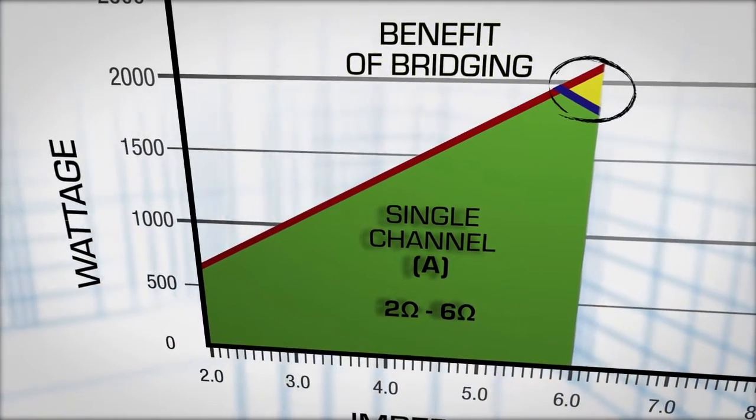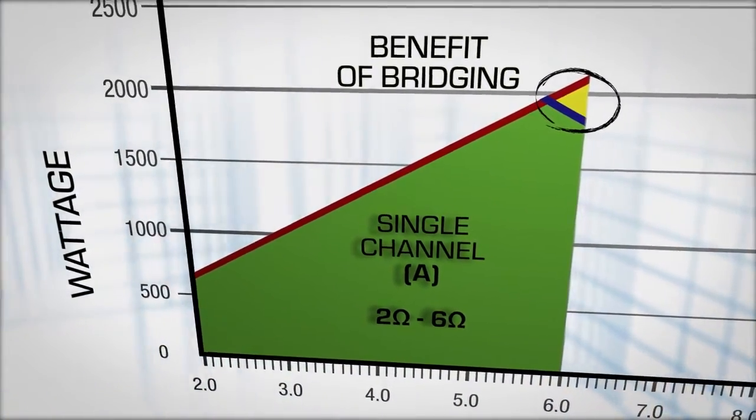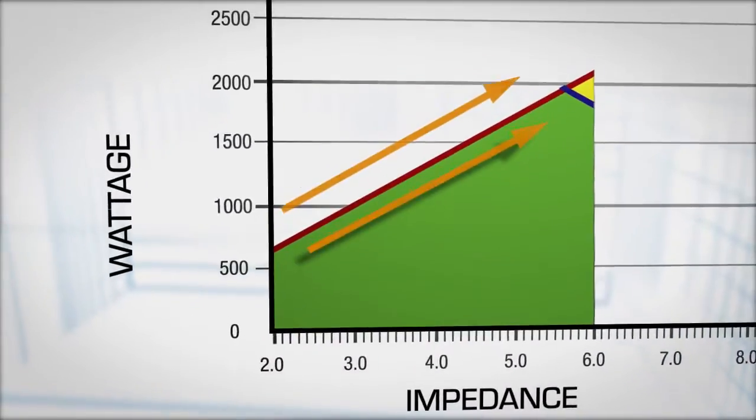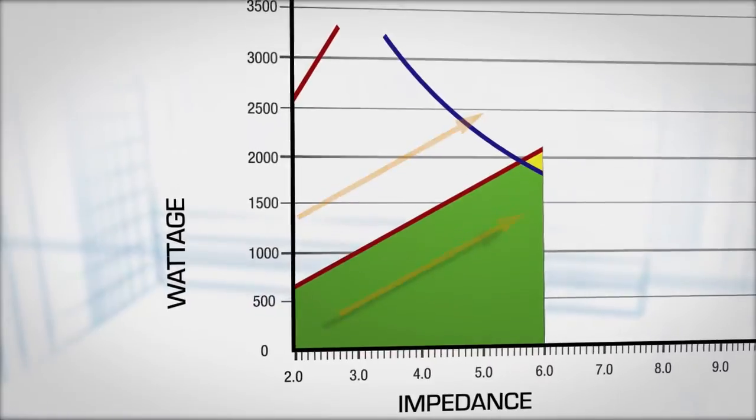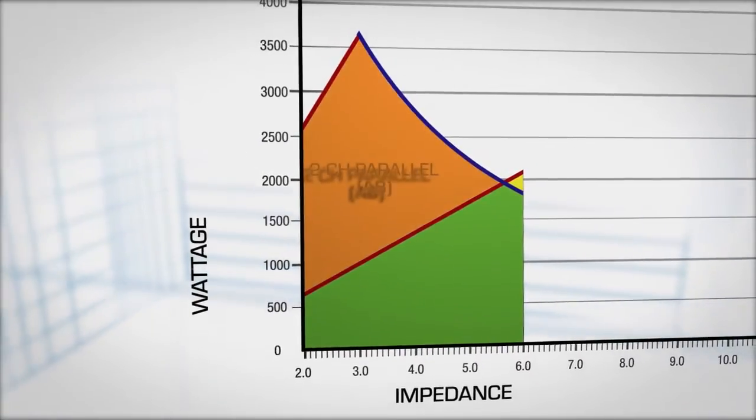FAST technology takes this idea to the next level. First of all, FAST allows for any combination of four channels to be summed and run in parallel mode. When two channels are run in parallel mode, they provide far better utilization of the current for higher power at low impedances.